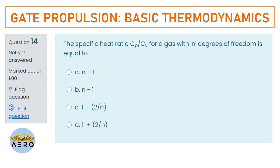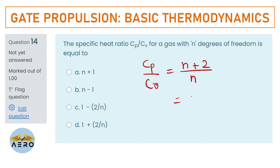The specific heat ratio Cp/Cv for a gas with n degrees of freedom is given by: Cp/Cv = (n + 2)/n, which can also be written as 1 + 2/n. The right option is option D.